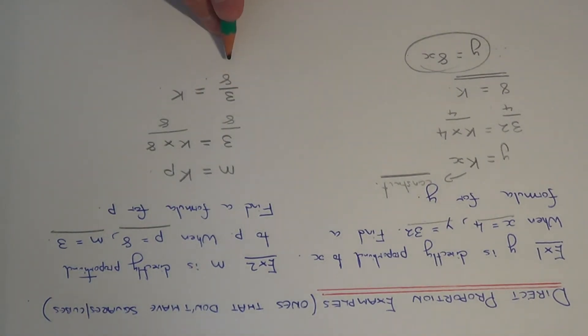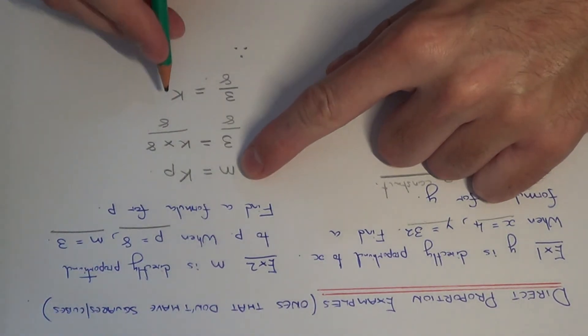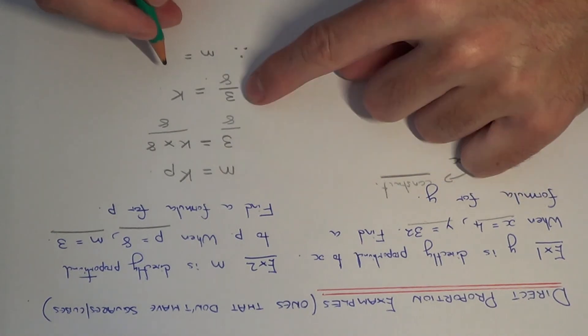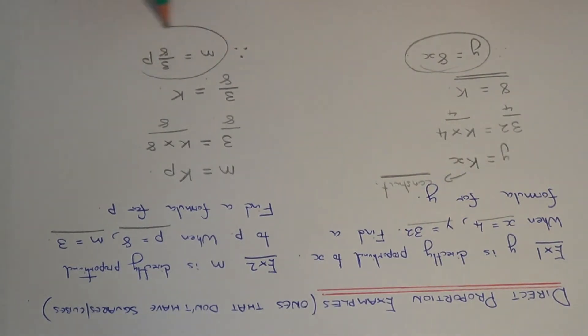So our value of k is 3 eighths. So we just need to now write our formula down. So if we go back to the start and just change the k to 3 eighths. So m is equal to 3 eighths p. And this is our final answer.